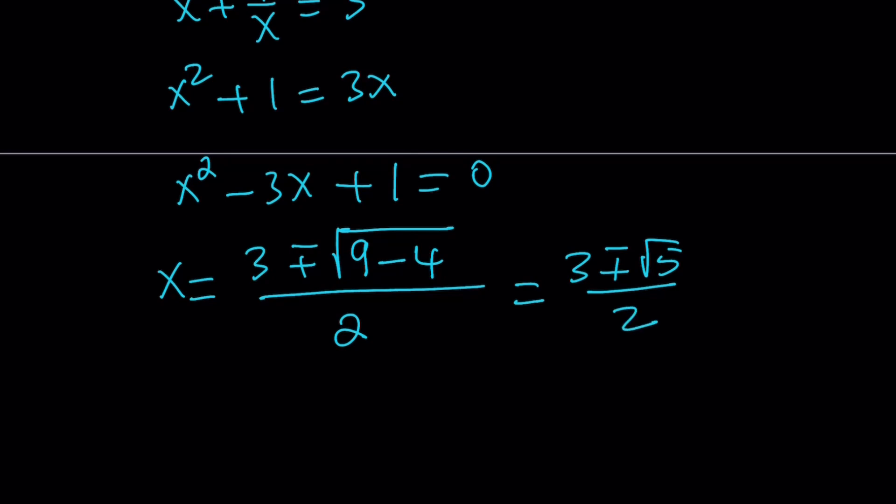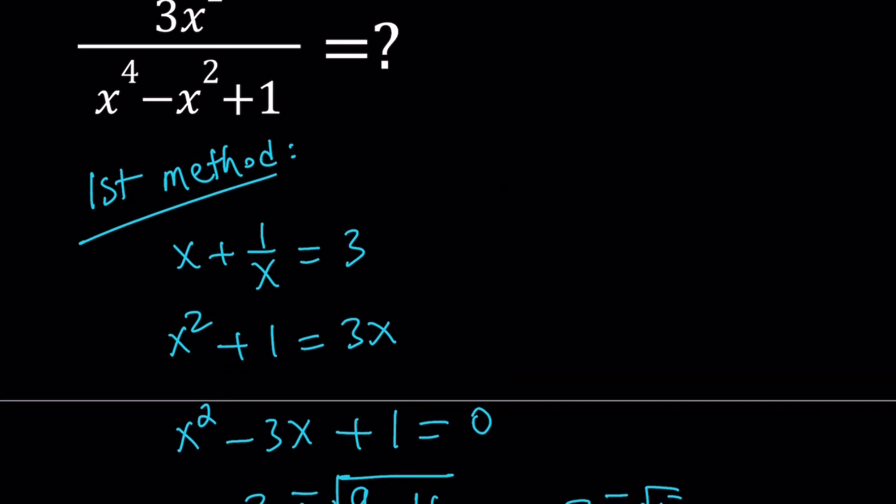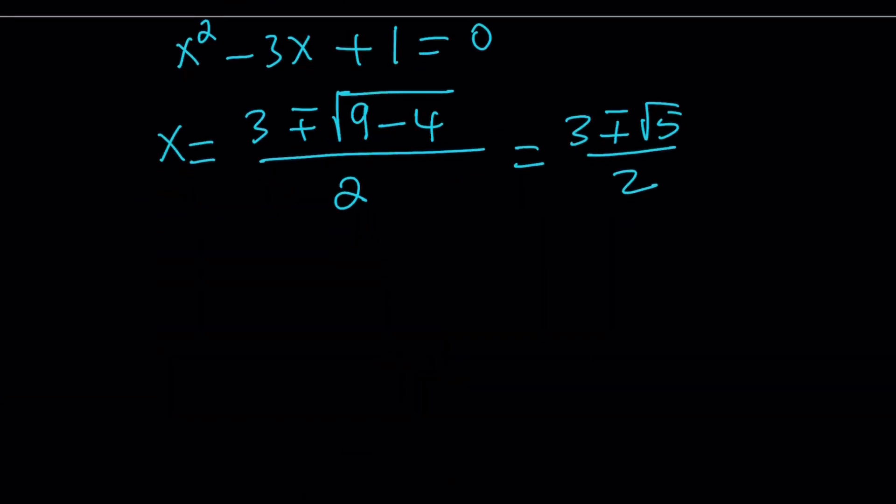Now, if you've dealt with the golden ratio, this expression should be familiar to you. But anyways, that's another story. So we got two x values because it's quadratic and the solutions are different. What are we going to do with those? Well, we're supposed to evaluate this expression, that algebraic expression. So we can go ahead and substitute the x values.